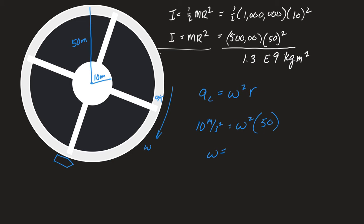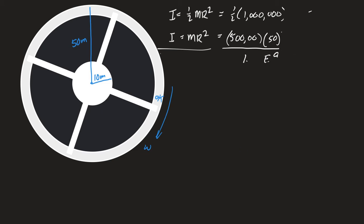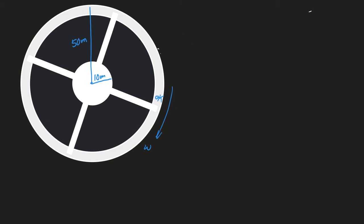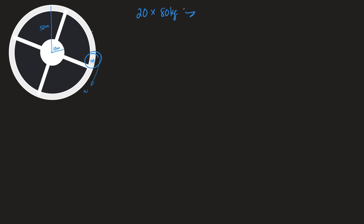Let's keep this an angular momentum problem and go to the next one. Whatever the spin rate is we're going to need it. The system is spinning at 0.447, but we're going to have a whole group of people — 20 people, each 80 kilograms — all going for a 5 meters per second sprint on the space station.